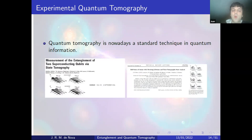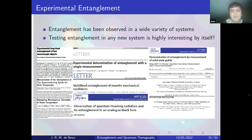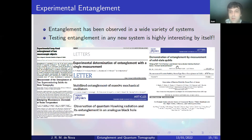Quantum tomography is a standard technique in the lab, performed with superconducting qubits, photons, and atoms. The typical result is a plot showing all coefficients of the density matrix including real and imaginary parts. Entanglement has also been tested in many systems: superconducting qubits, macroscopic diamonds, analog Hawking radiation, atoms, and nitrogen-vacancy centers. Testing entanglement in any new system is highly interesting, because entanglement is perhaps the most genuine feature of quantum mechanics.